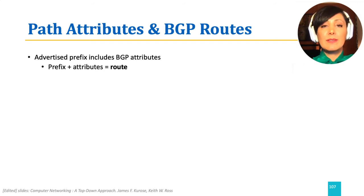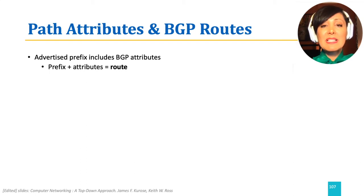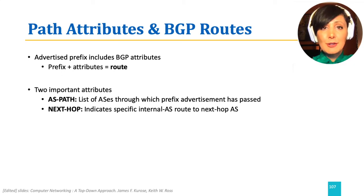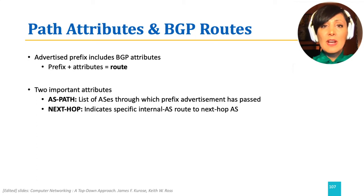The goal of inter-AS routing is to find paths to reach specific prefixes in the network. BGP advertises those prefixes with a set of attributes to maintain them as routes. Two important attributes are AS path and next hop. AS path is the list of ASs through which the prefix advertisement has passed — the path vector. Next hop indicates the specific internal AS route to the next hop AS. There are many other attributes, such as local preference and AS path length, that can help decide the next hop to an AS or external destination when within an AS.